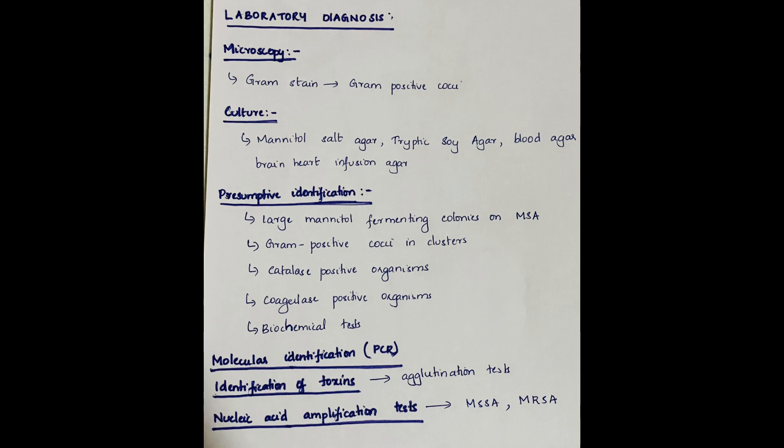Molecular identification can be done by PCR. Identification of toxins: toxins produced by Staphylococcus aureus such as enterotoxin A to D and toxic shock syndrome toxin 1 can be identified using agglutination test. Nucleic acid amplification tests are useful for screening patients carrying methicillin-sensitive Staphylococcus aureus MSSA and methicillin-resistant Staphylococcus aureus MRSA.